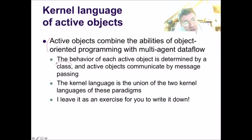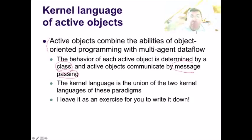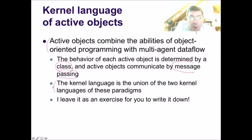Finally, we have our fifth paradigm: active objects, which combine the abilities of object-oriented programming with multi-agent dataflow. The behavior of each active object is determined by a class, and active objects communicate by message passing. Both ways of thinking are possible in this paradigm of active objects, and the kernel language of this paradigm is the union of the kernel languages of its two component paradigms.